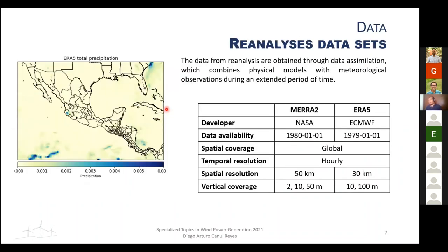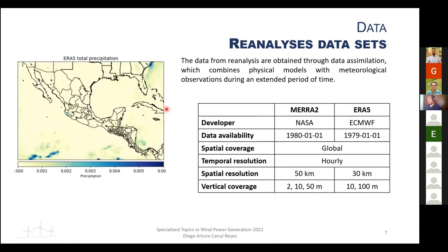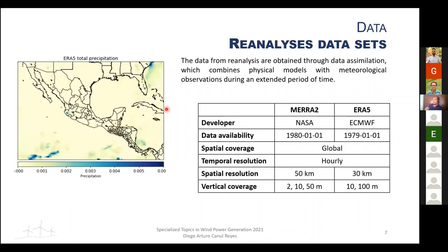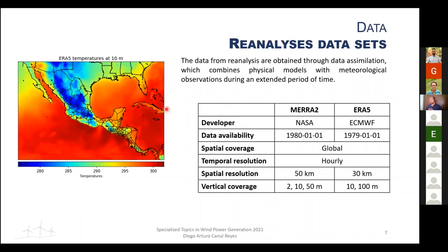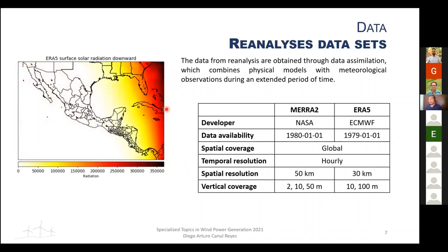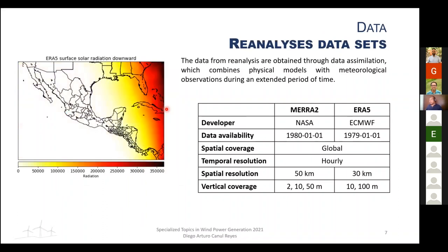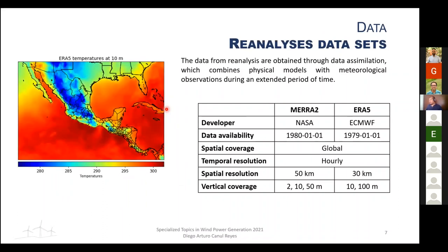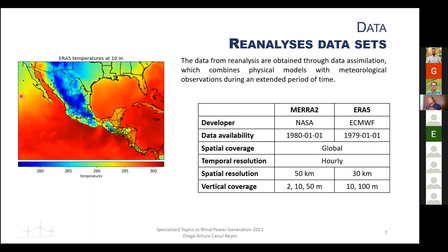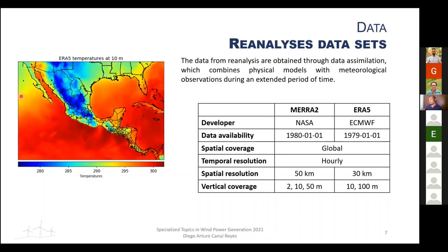Reanalysis datasets are a combination of data simulation using physical models and meteorological observations over extended periods of time, with around 30 variables in each model. Only wind data was used here. Two datasets were selected so that potential zones with high wind speed could be confirmed across both models.